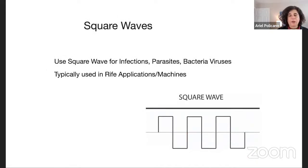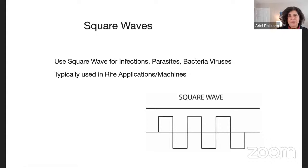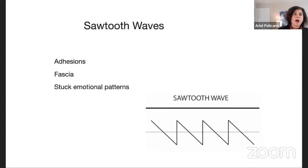Another waveform is the square wave. You use the square wave when working on infections, parasites, bacteria, and viruses — it's typically used in Rife applications and different Rife machines. The square wave goes up, holds that frequency, then goes way down and holds a lower frequency. Something about the square wave seems specifically suitable when running hertz frequencies for different types of infections.